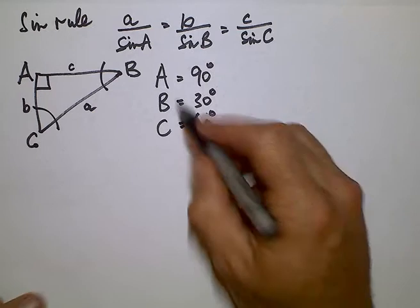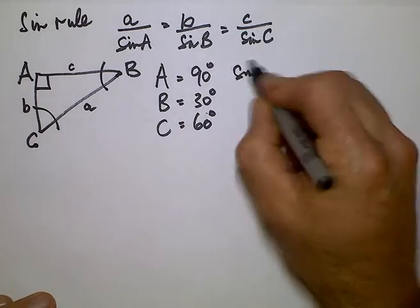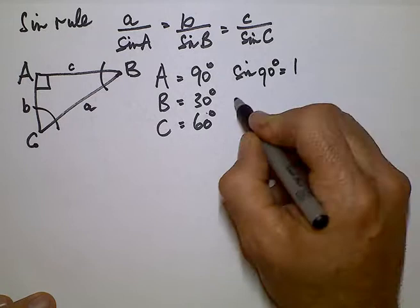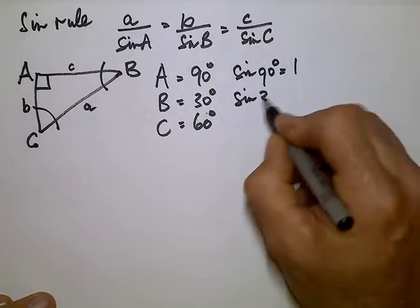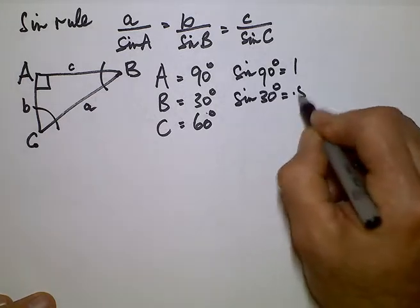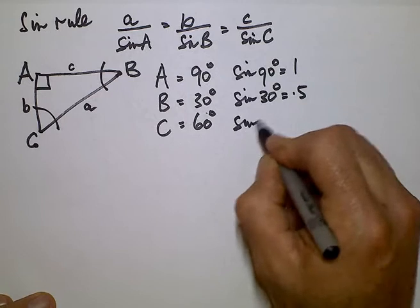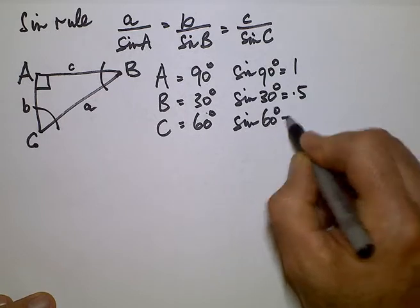Now we know the Sine of 90 degrees equals 1, and the Sine of 30 degrees equals 0.5, and the Sine of 60 degrees equals 0.866.